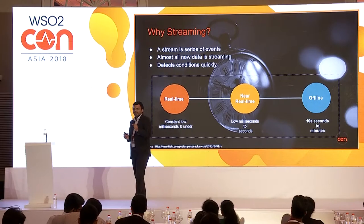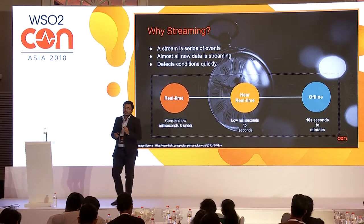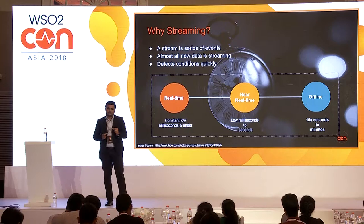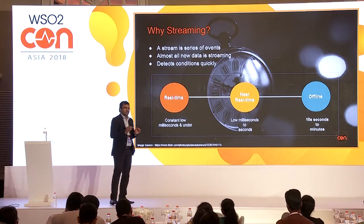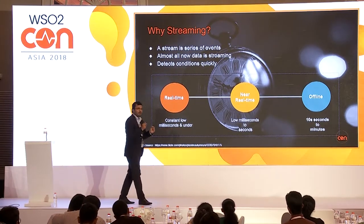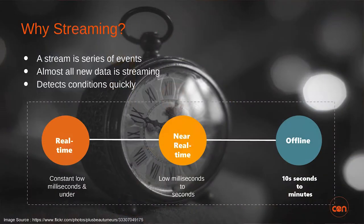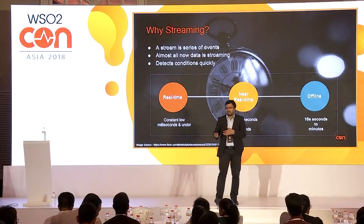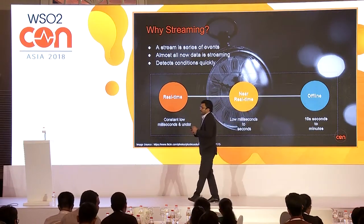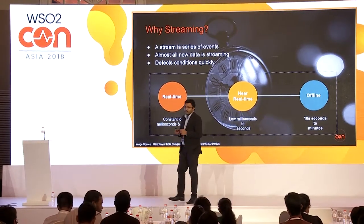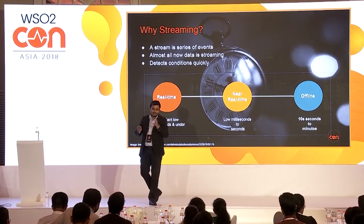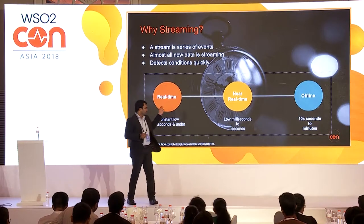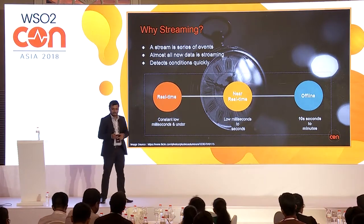The most important factor in streaming data is the time taken to make decisions, or how quickly we can make decisions. Based on that, we can define three phases: real-time, near real-time, and offline. Streaming data applications mainly come under the real-time and near real-time areas.